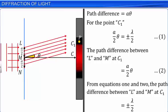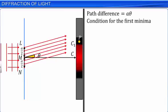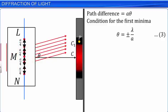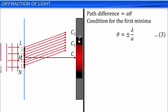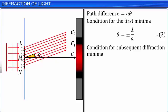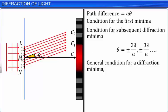Hence, the condition for the first minima is theta equals ±lambda/A (Equation 3). This implies that the central maxima can be made wider by making the slit narrower. We can also divide the slit into 4 parts, 6 parts, and so on. Using a similar argument, we can show that the subsequent diffraction minima occur whenever theta equals ±2lambda/A, ±3lambda/A, and so on. So the general condition for a diffraction minima can be written as theta equals n×lambda/A, where n is an integer (Equation 4).